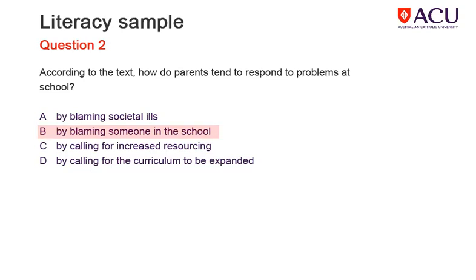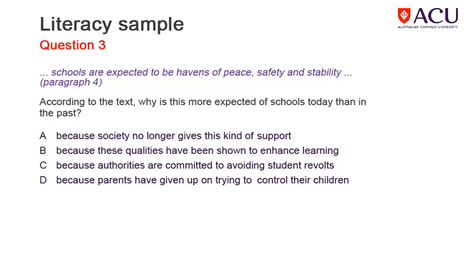Remember to use your knowledge about the purpose and structure of texts and paragraphs. Use headings and topic sentences to help you navigate to particular parts of the text. In the next question, you are directed to paragraph four. Again, it's 'according to the text'. You may need to carefully and actively read paragraph four, or read intensively, in order to select the correct answer. Work through the possible answers — can A, B, C and D be inferred from the text? This question appears to be asking for the most correct answer. Look at sentence one: schools meeting the social and psychological needs of students. Sentence two: the juxtaposition of fragmented societies and schools as havens of peace, safety and stability. The most reasonable inference is A.